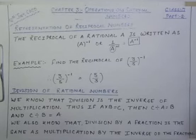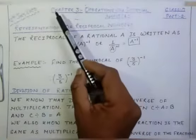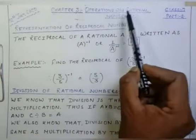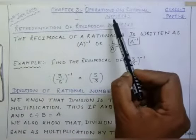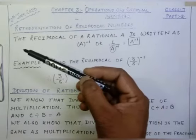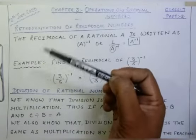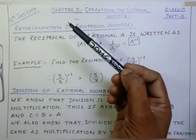Welcome back to the online classes. I hope you all are safe and sound at home and studying at home. Today we are going to continue with the same chapter, that is Chapter 3: Operations on Rational Numbers. Last time I explained addition of rational numbers, subtraction of rational numbers, and multiplication of rational numbers.